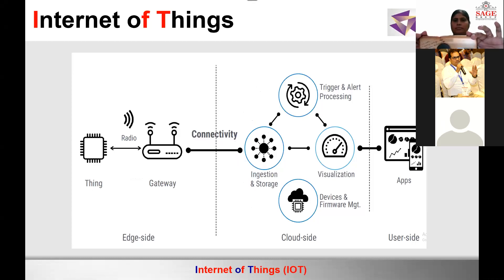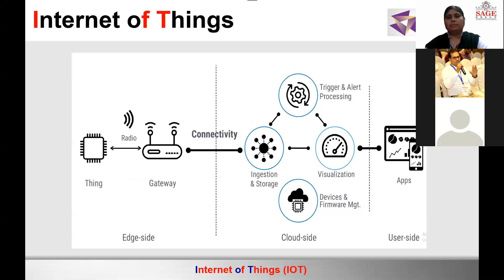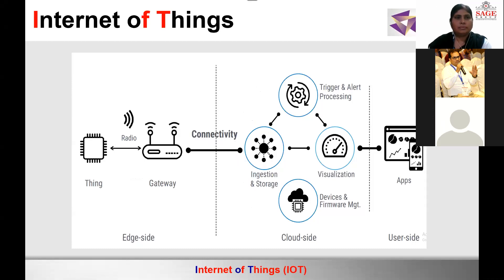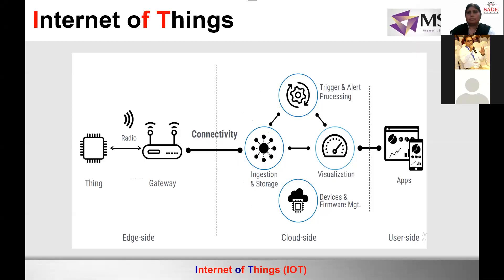The same way Uber, Zomato, and Swiggy are working. At one end there may be people, at another end there may be a machine, or people at one end and machine at another end. So in short, what is Internet of Things? It is a network of people and processes which is controlled remotely.